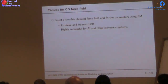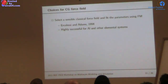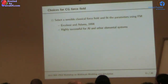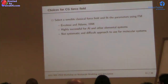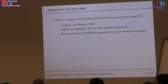Ercolessi and Adams first introduced force matching as a way to systematically fit parameters to predetermined classical forms. They were very interested in elemental materials — when they used this to develop a potential for aluminum, they were highly successful, and it's still a potential in use today. However, if you want to extend that to non-elemental systems with bonds and molecular interactions, it's not as systematic, and it's very difficult to build up for use in molecular systems.